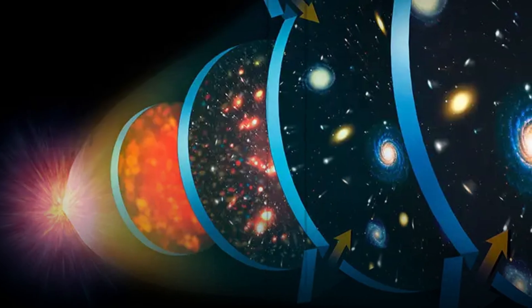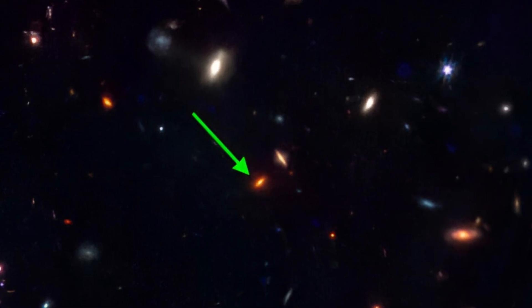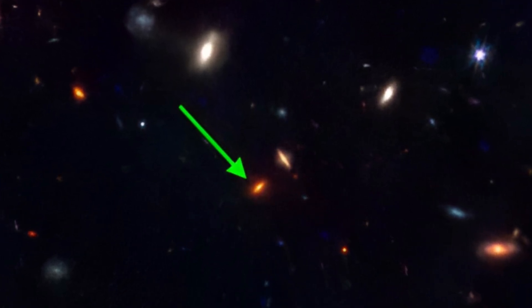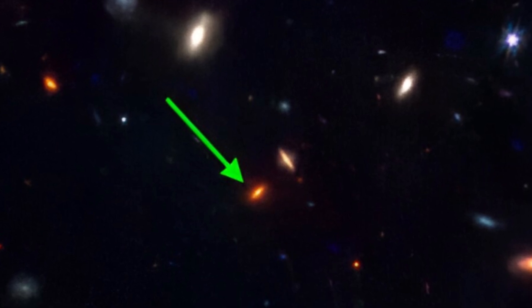When we observe this galaxy, we're seeing it as it was when the universe was only 290 million years old. Currently, this galaxy has moved beyond the observable universe, and we can no longer discern its present state, because the light from it will never reach us.